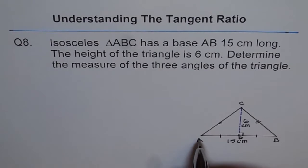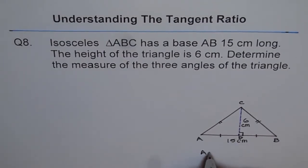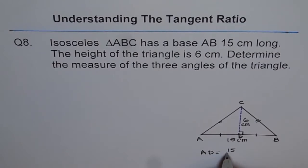Now, the side length AD is how much? Half of 15 cm, right? So AD equals half of 15, which is 7.5 cm.